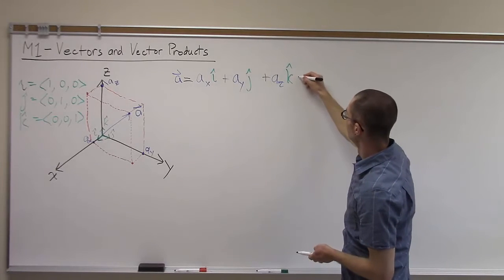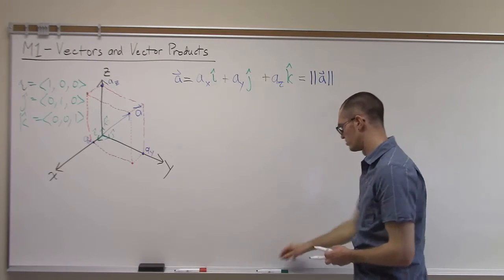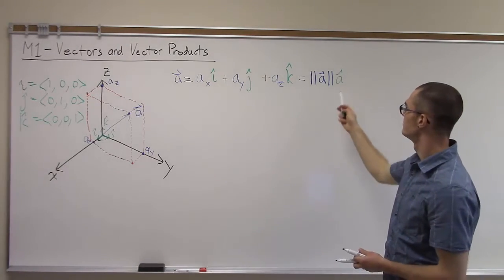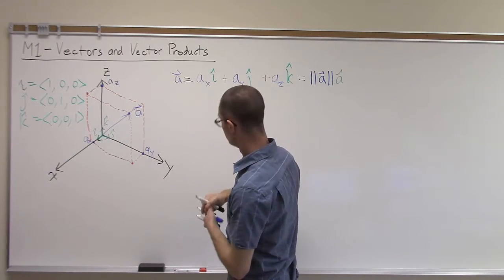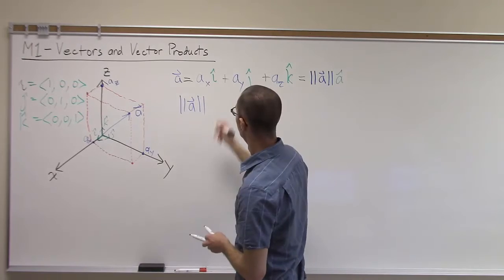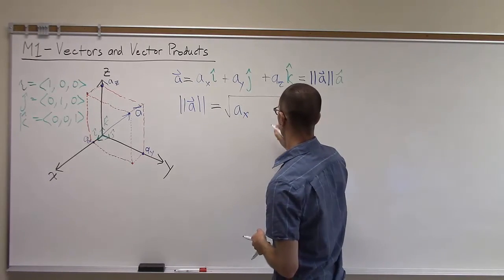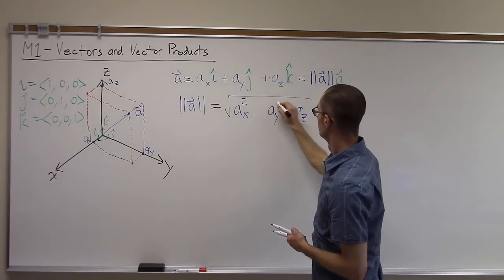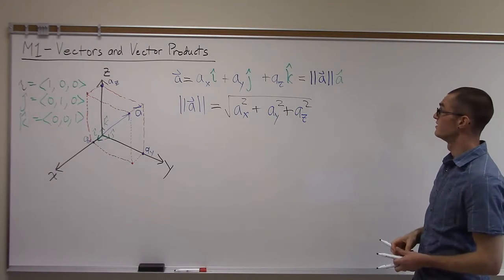Another way we can write that vector is by expressing it as a magnitude multiplied by a unit vector. A vector is an object that has a magnitude and a direction. We get the magnitude of A from the Euclidean distance formula: the square root of Ax squared plus Ay squared plus Az squared. That gives us the magnitude of the vector.